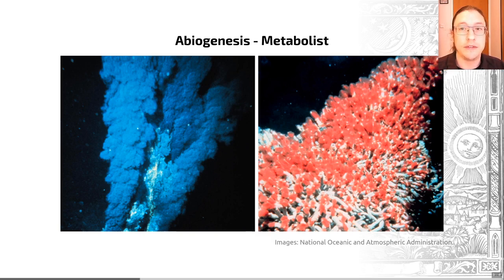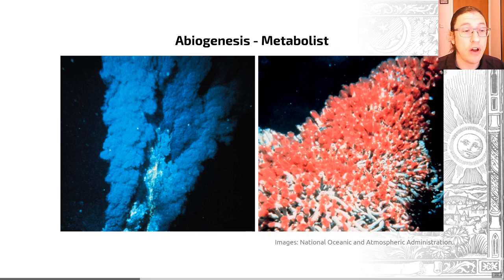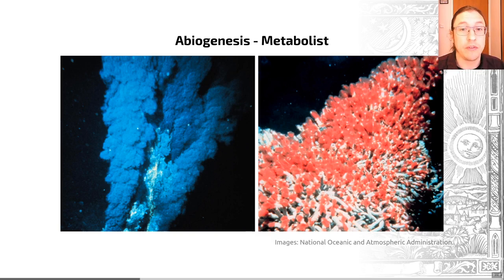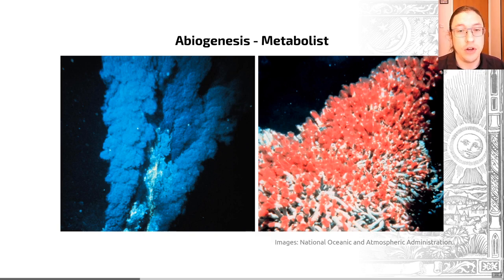So those are two potential ways in which abiogenesis could have happened on Earth. As highlighted, in this particular area we are very low on direct evidence from this time period, and that means there is quite a lot of uncertainty regarding how abiogenesis occurred and the next steps in evolution, which I will be highlighting in the next video.